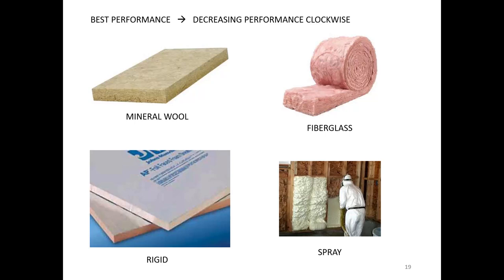Looking at the different characteristics that affect transmission loss, starting with insulation that fills the cavity — beginning with the best and going clockwise to lower quality: mineral wool is the best, fiberglass is a close second (often only a decibel or two less than mineral wool), then closed-cell spray foam or rigid foam insulation, which results in significantly lower sound isolation. You want to steer people toward mineral wool if possible, with fiberglass as a solid second choice, and try to stay away from the closed-cell stuff.